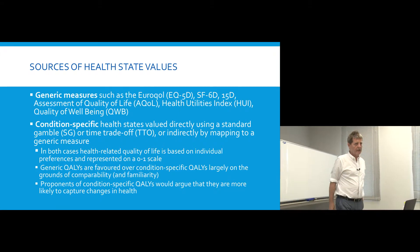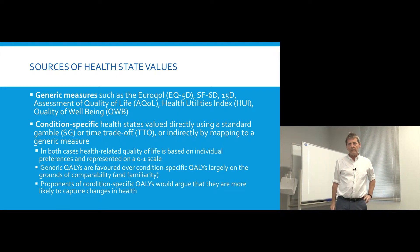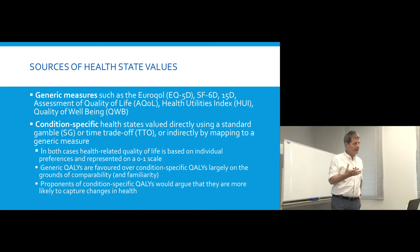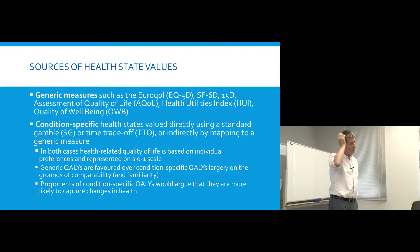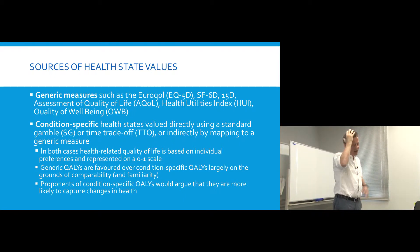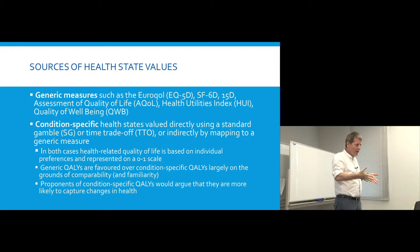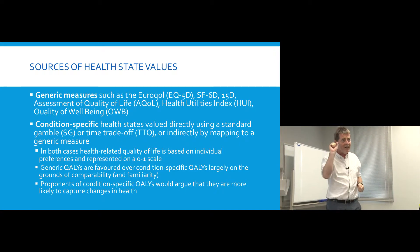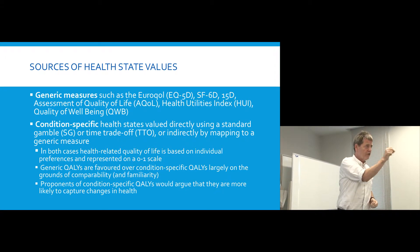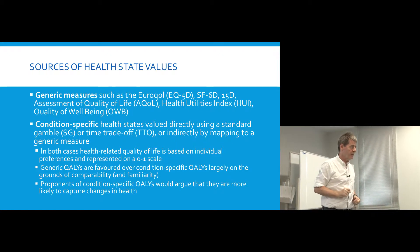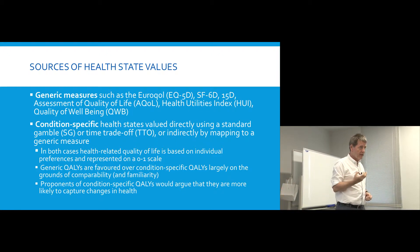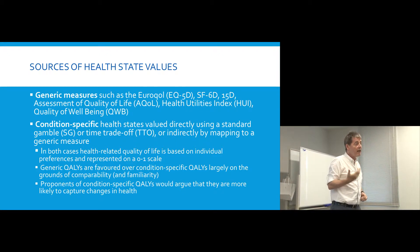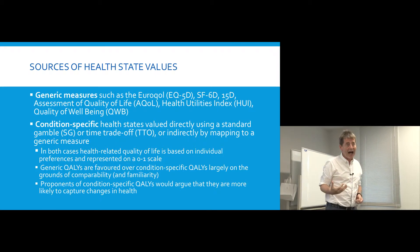So what are the sources of health state values? To be explicit: a health state is simply a description of somebody's health, and the health state value is a number we want to attach to being in that health state. This number indicates relatively how good or how bad being in that health state is.